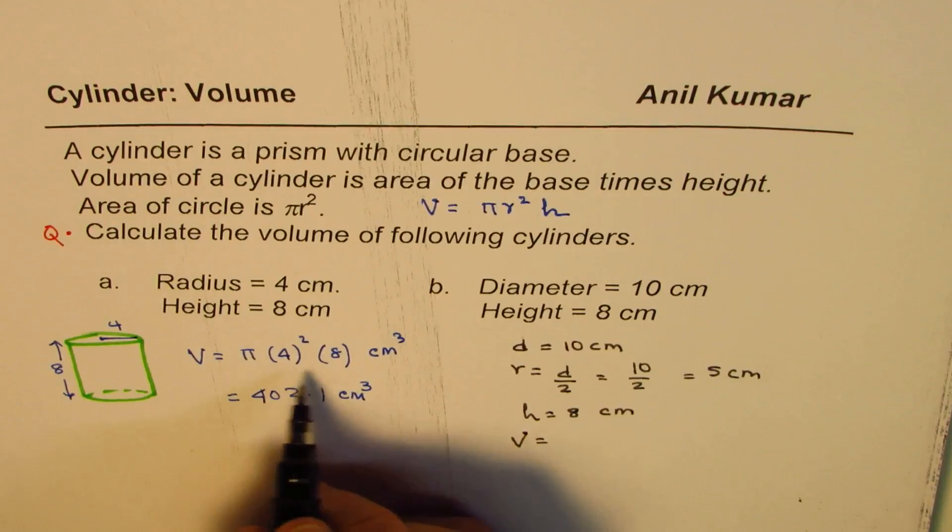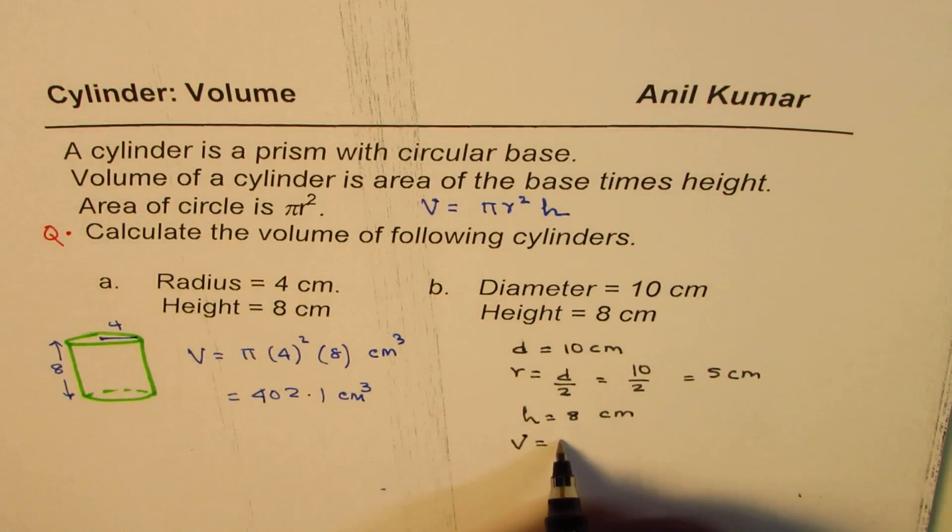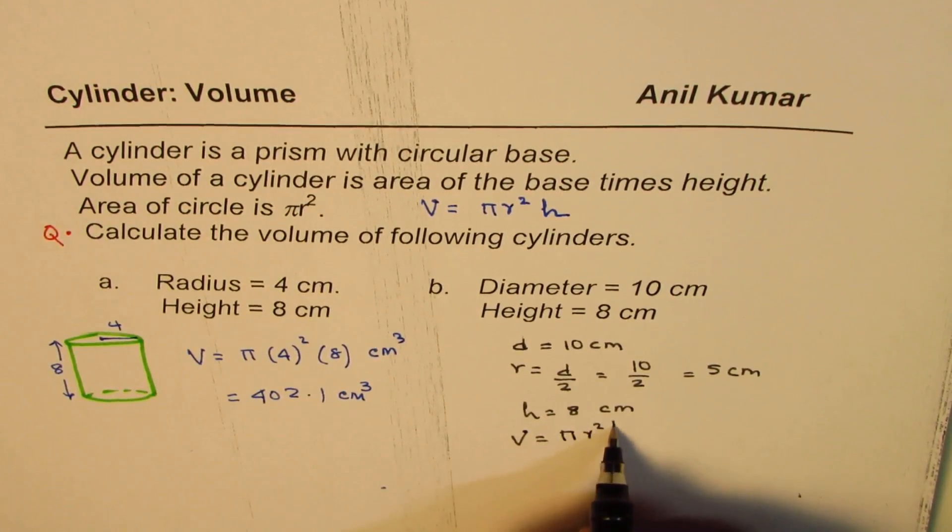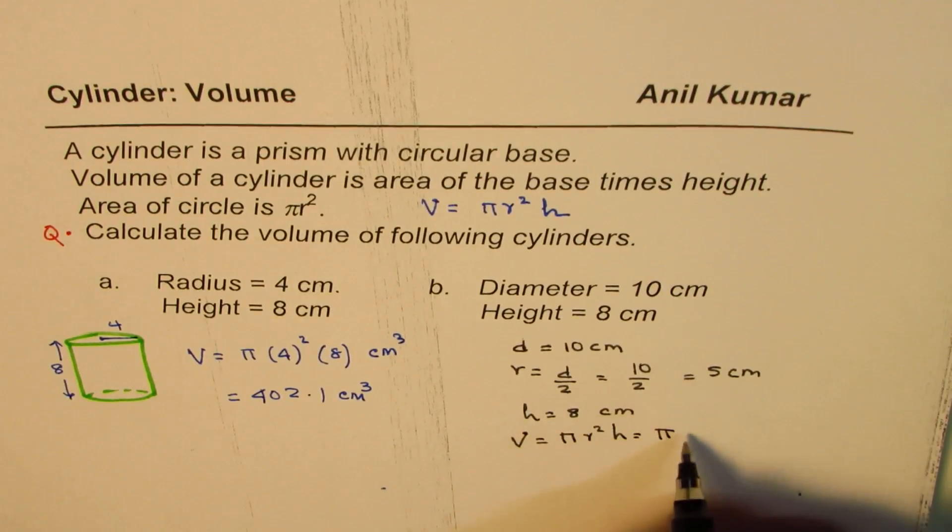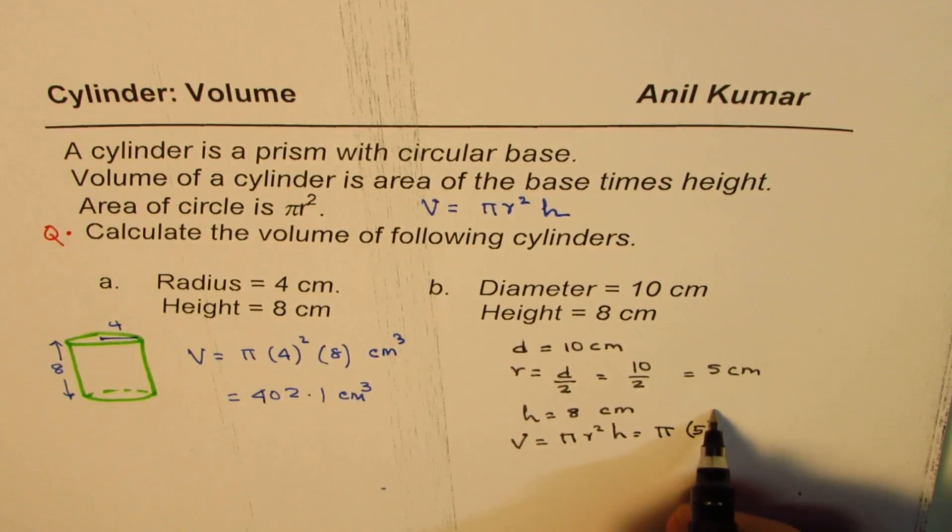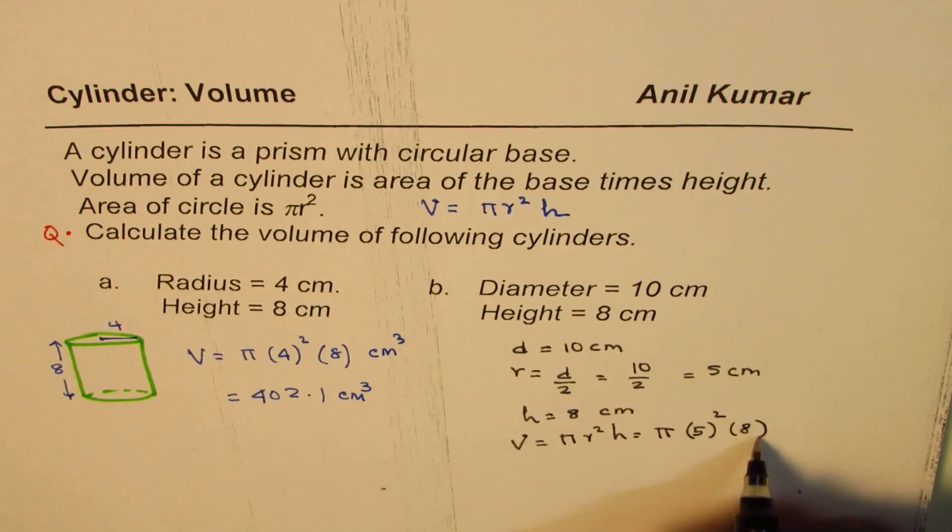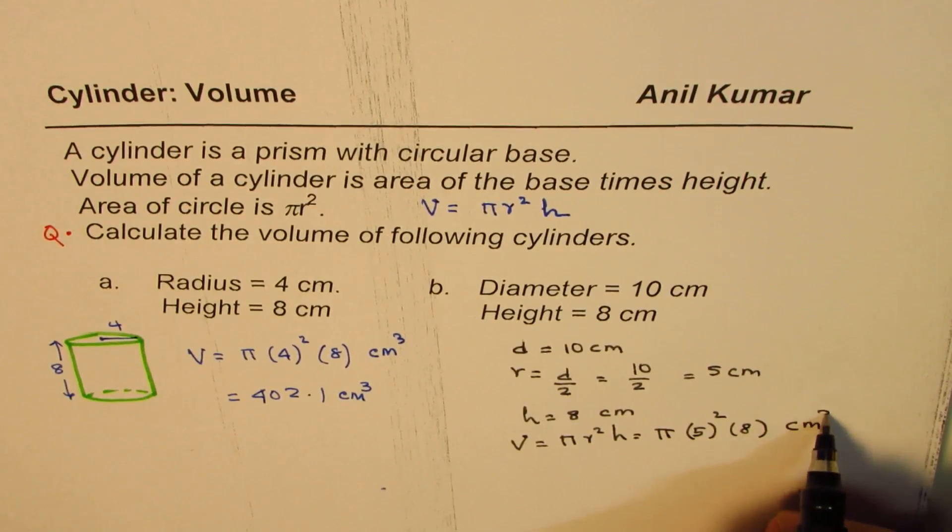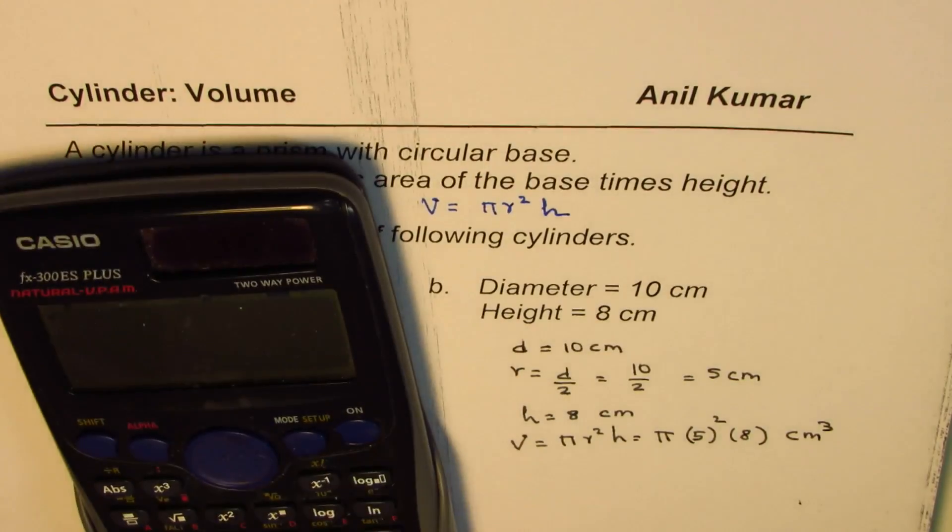Volume is, as you know, the formula pi r square h. So it is pi, radius is 5, so 5 square and height of 8. And the units will be centimeter cube.